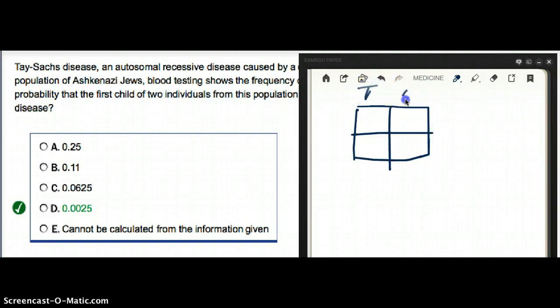Let's say big T, little t, big T, little t. This is one parent, this is the other parent.